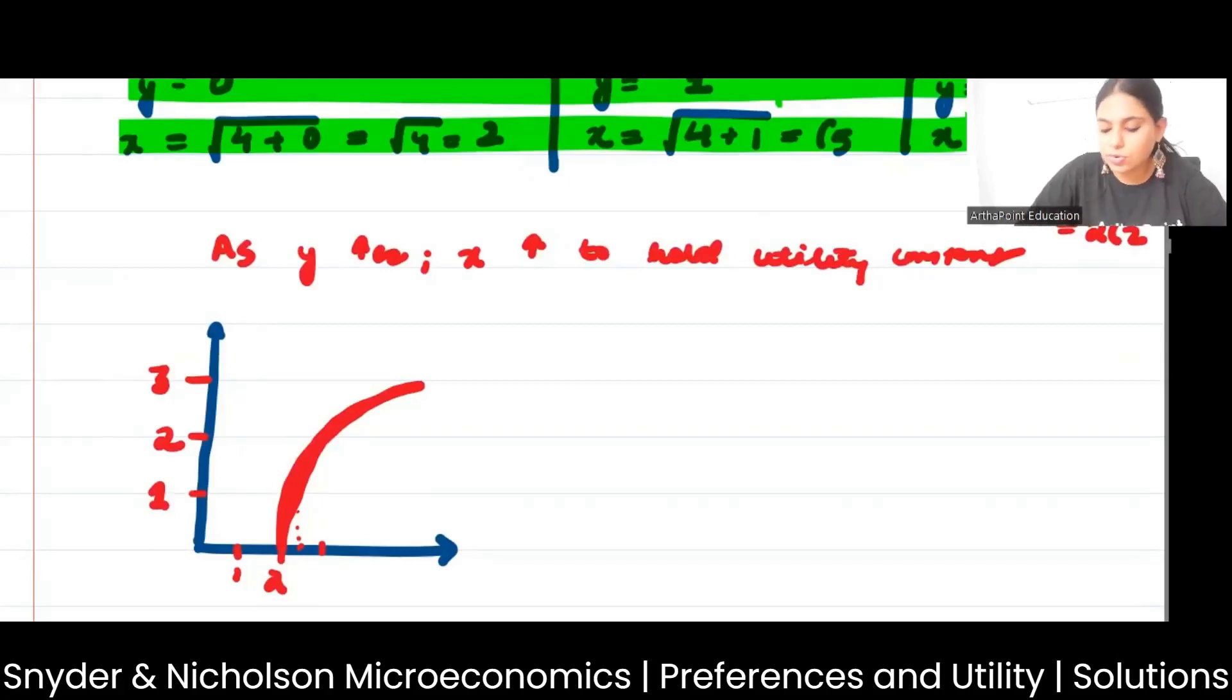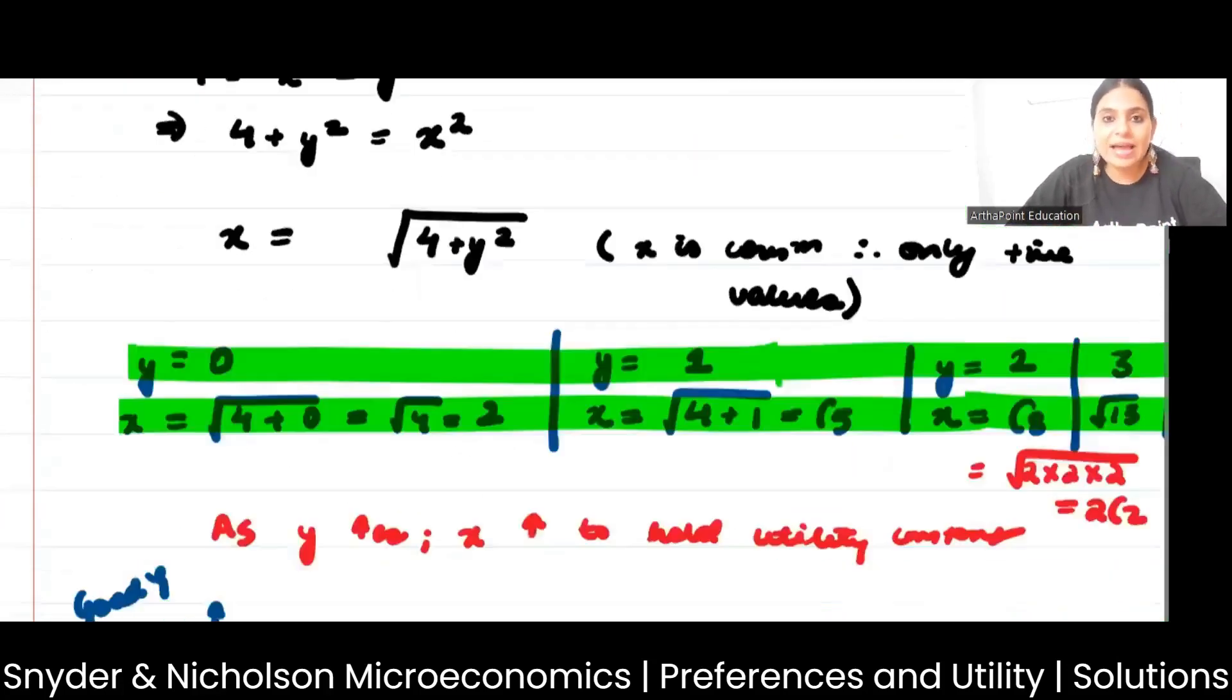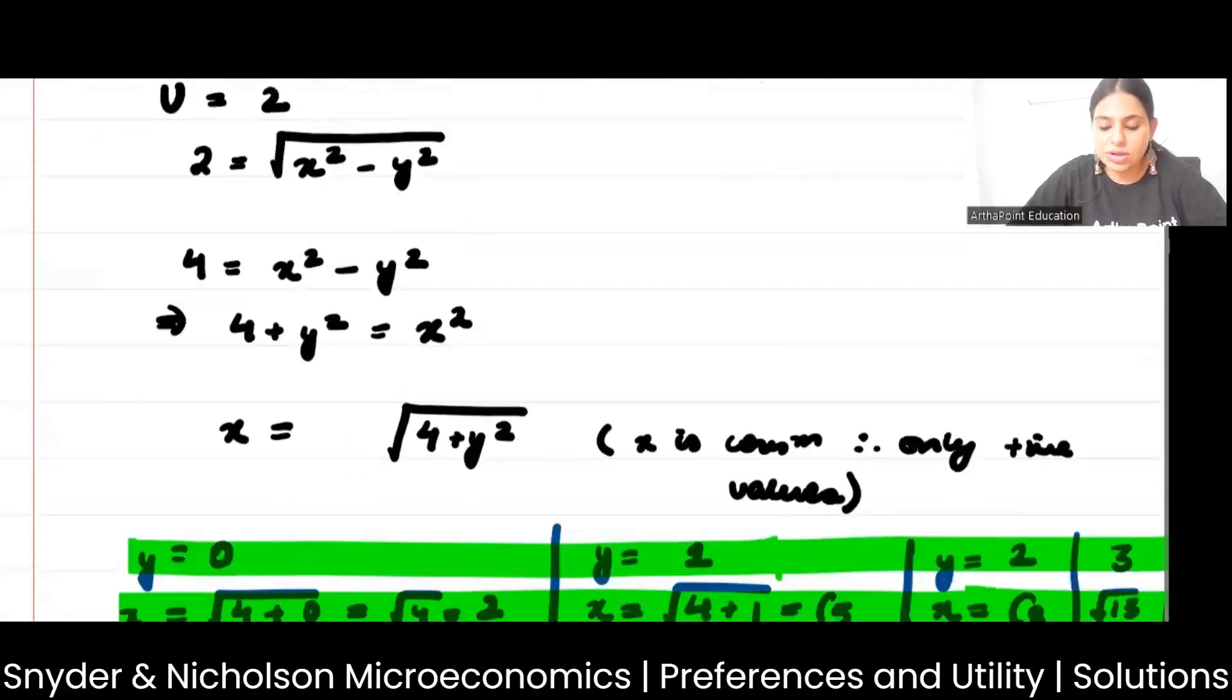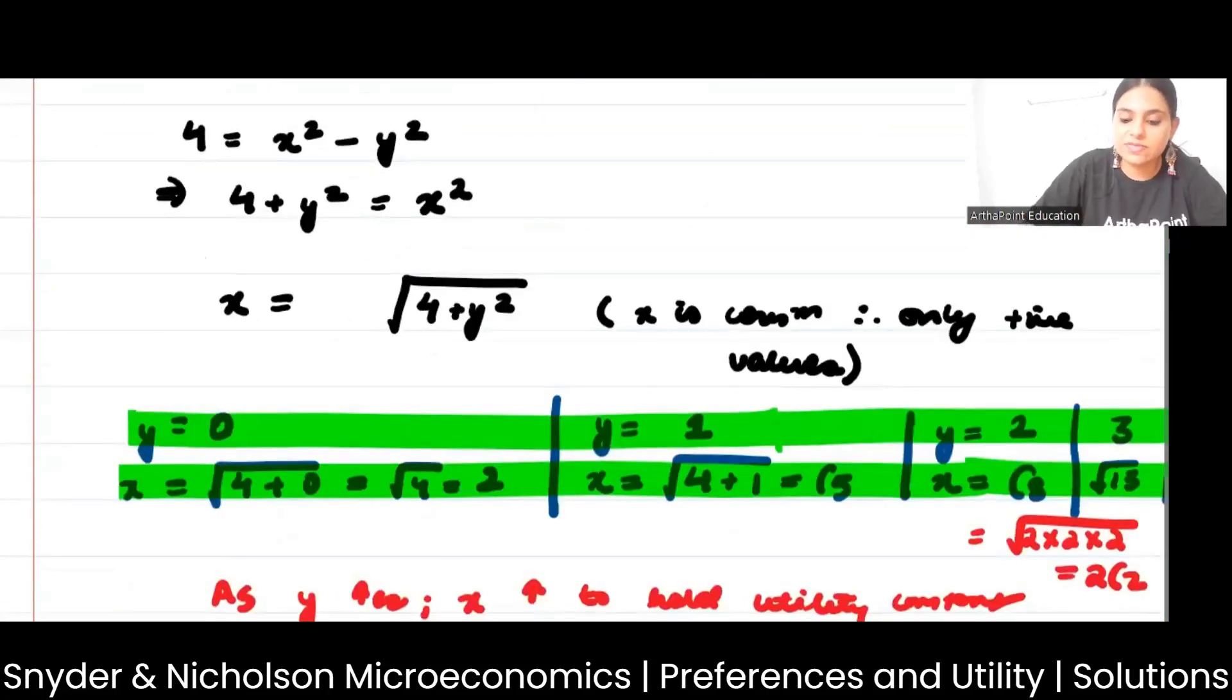Now just consider one more thing here. This is good x, good one. If I look back at my utility function, I can take this form only.